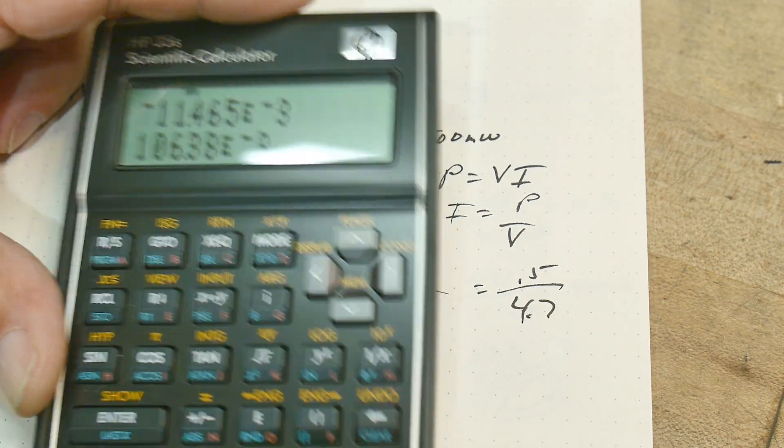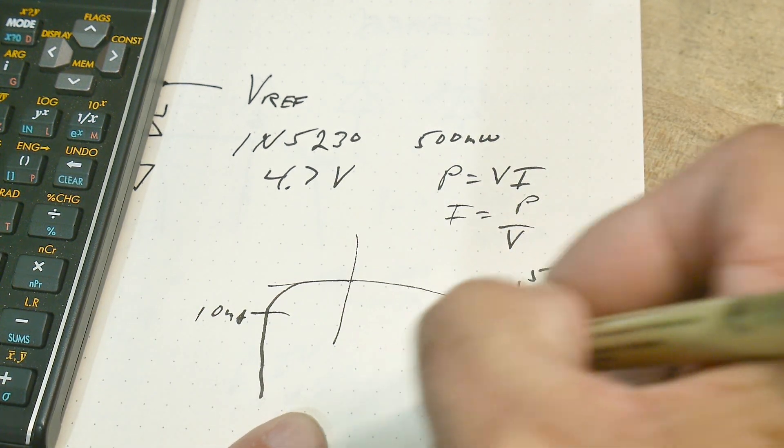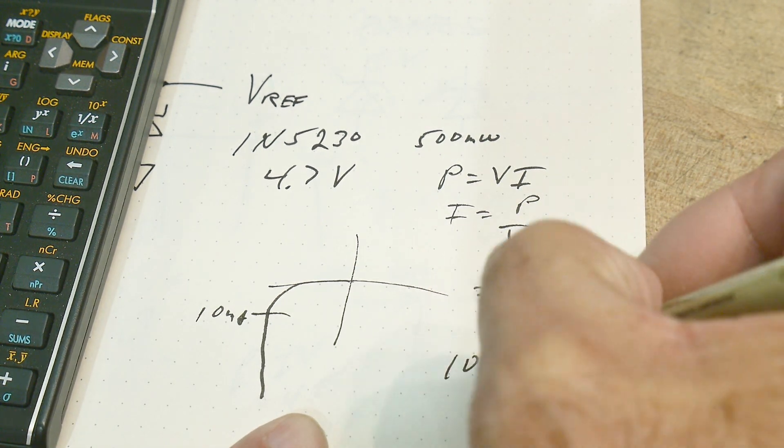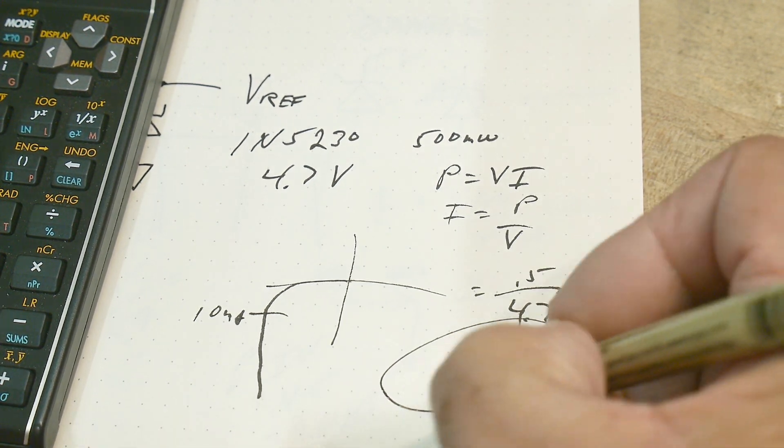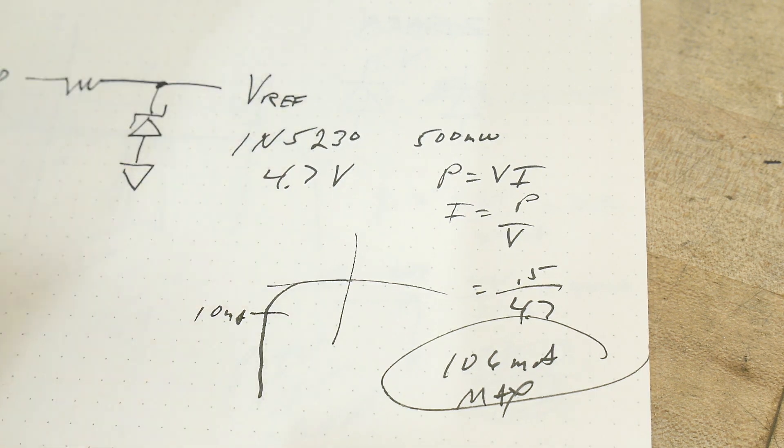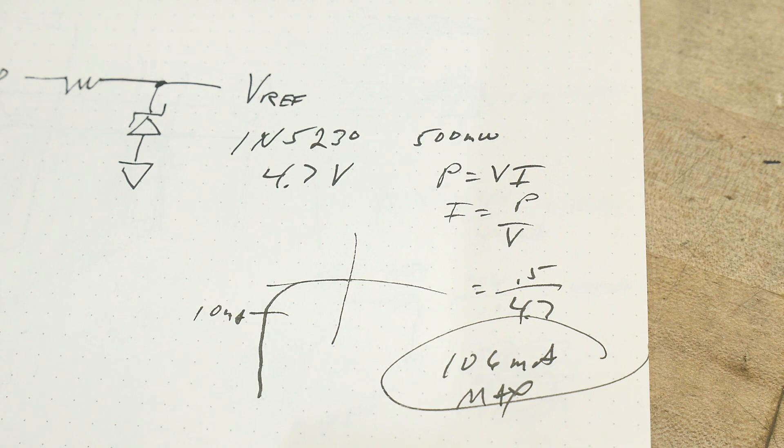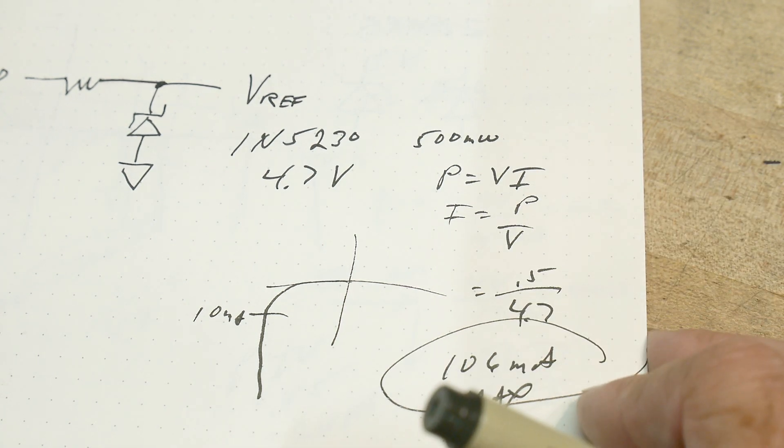All right. We have 0.5 and we have 4.7. We have 106 milliamps. So that's the maximum current that this particular Zener diode can handle. All right. But we're only going to be using it at 10 milliamps. So we're way, way good.